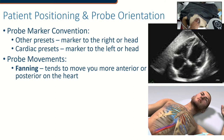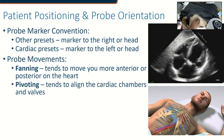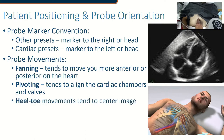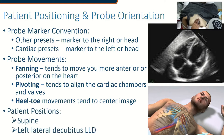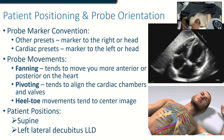Holding the probe this way also gets your hand out of your own way so you can lay the probe right down to the patient's abdomen. It also lets you pile gel into this space so it doesn't spread all over their body, and you can maintain good contact even with fairly robust fanning movements. The pivot helps align the cardiac chambers and valves by getting the actual axis of the heart in line. Heel-toe movements tend to center the image and align things in the midline.